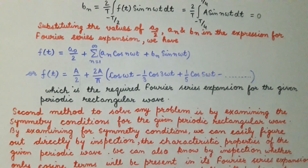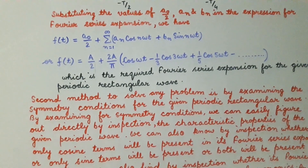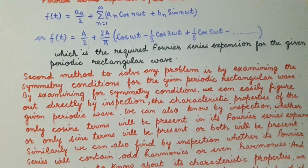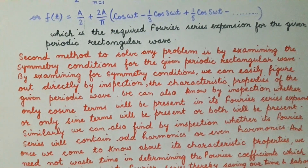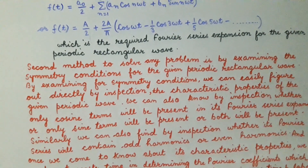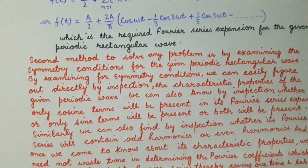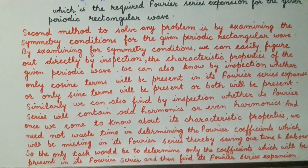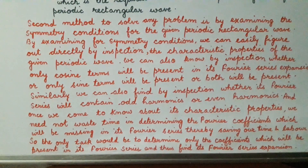This is the Fourier series expansion for the given periodic rectangular wave shown in figure a. We can also solve this problem by examining the symmetry conditions for the given periodic rectangular wave. By examining the symmetry conditions, we can directly determine by inspection the characteristic properties of the given periodic wave.